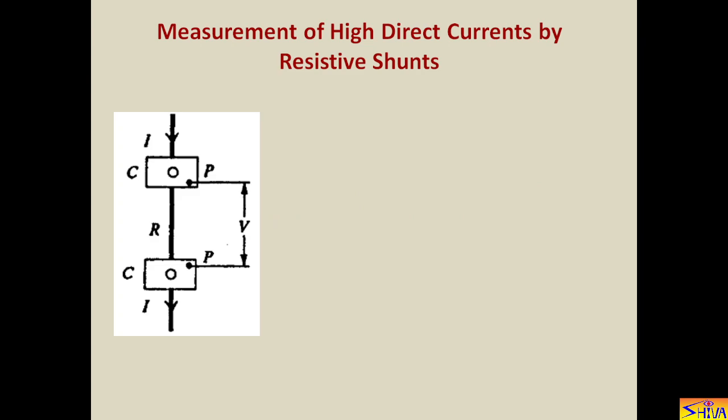I am directly jumping to measurement of high DC current because for high AC current the method is simple and you are familiar. For high AC current measurement we use CT, that is current transformer. But sources of error are there because all CTs have ratio and phase angle error, so some error comes in the measurement.